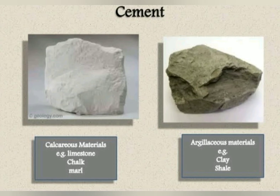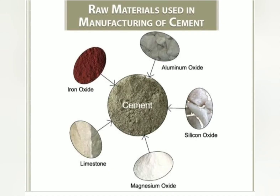The main item is manufacturing. First, collection of raw materials — we collect raw materials here. The calcareous material is limestone, and the other is clay. These are stored in a separate storage tank.